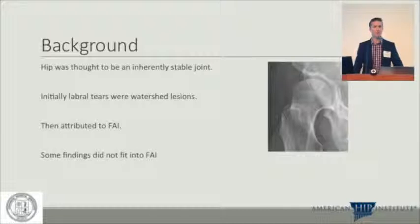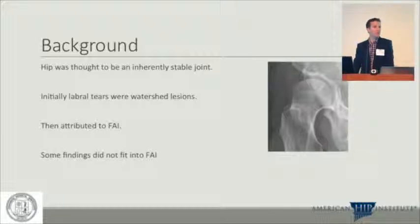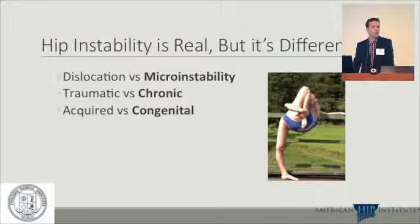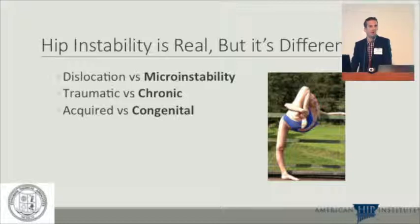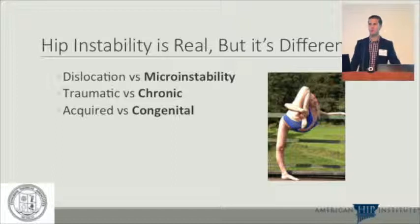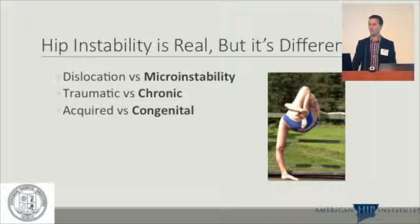Hip instability is real, but it's very different from shoulder instability. In the shoulder, it's more of frank dislocations that are traumatic, acquired-type problems. Whereas in the hip it's more of a micro-instability problem, chronic in nature, and sometimes related to congenital problems with either ligaments or bony architecture.